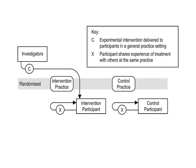One solution is to cluster randomise the trial at the practice level, which prevents contamination. If we assume that the flow of information does not extend between practices, then the circulating flow amongst control participants is isolated from the flow amongst intervention participants.